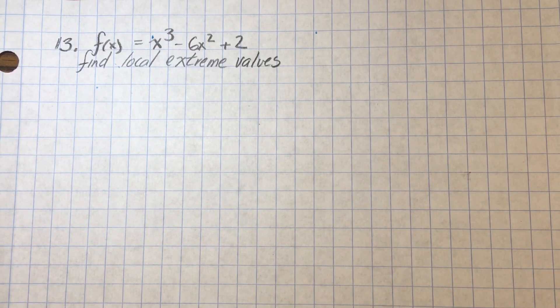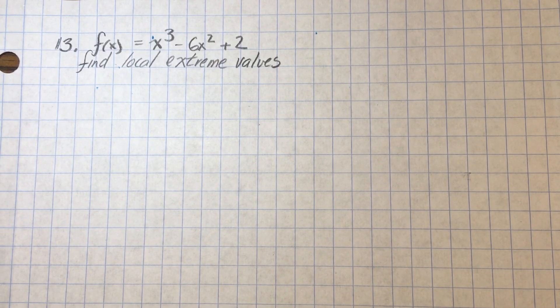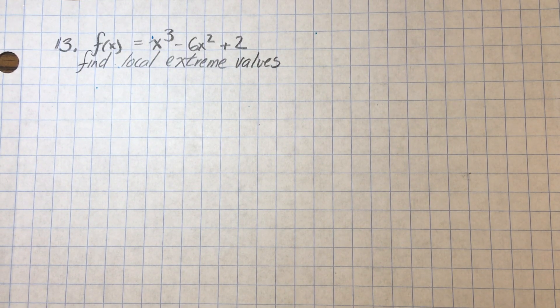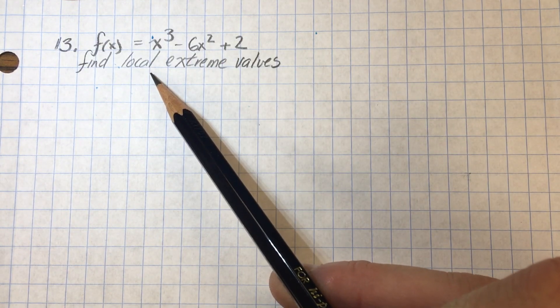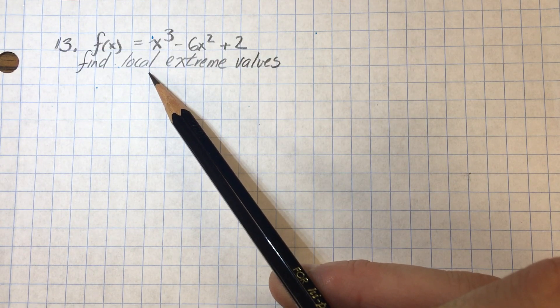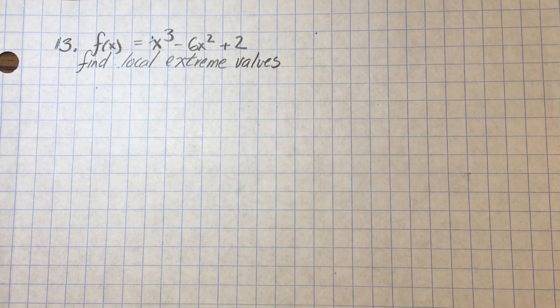We're going to do an example of finding local extreme values. The instructions on the homework say find critical values, but you should be doing that anyway. Before you find a maximum or a minimum, which is what a local extreme value is, you first need to make sure that your function is continuous, or at least at the places that you're looking at.